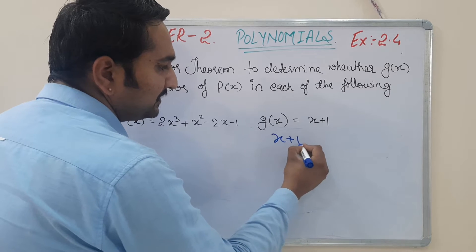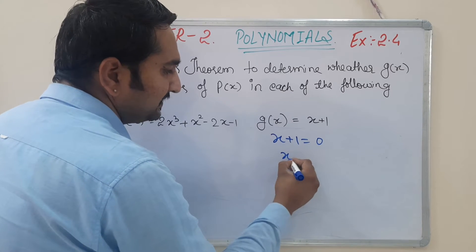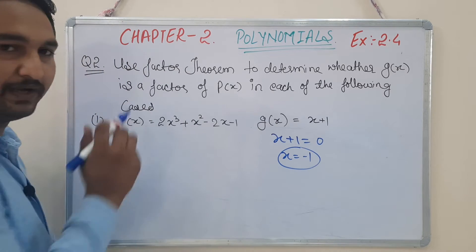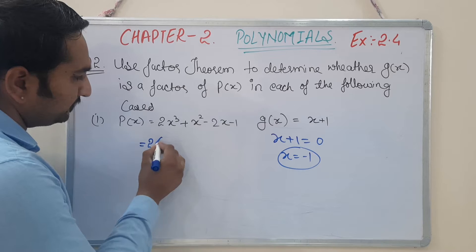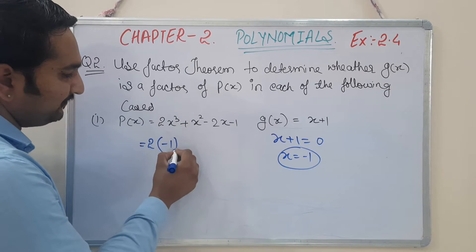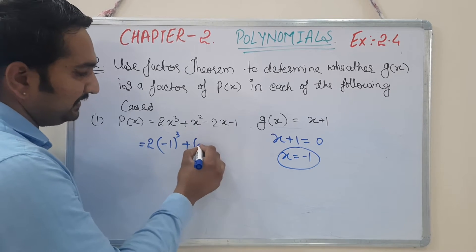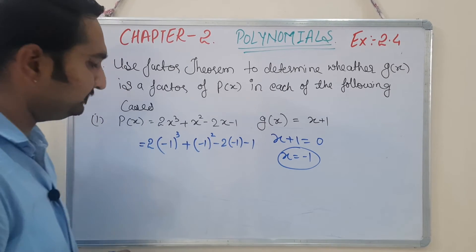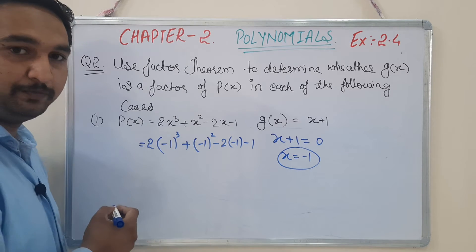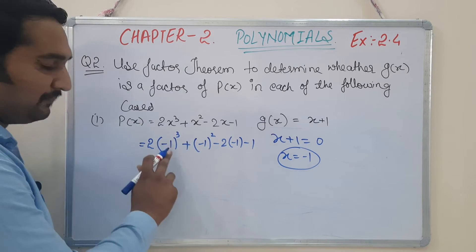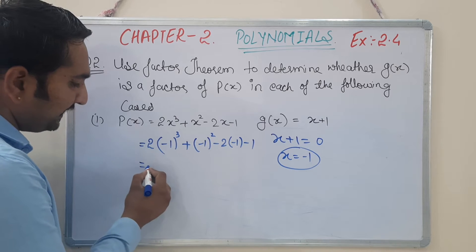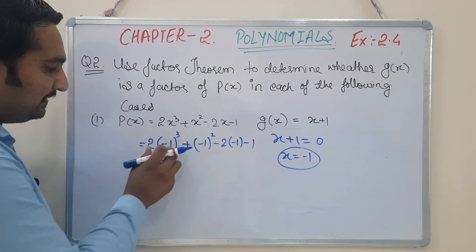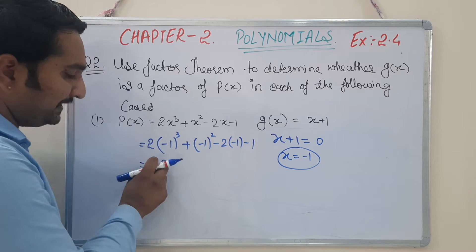For the first question, g(x) = x + 1, so x + 1 = 0 gives x = -1. We now put x = -1 into p(x). So we get: 2×(-1)³ + (-1)² - 2×(-1) - 1. Now (-1)³ = -1, so 2×(-1) = -2. The minus and plus give minus 2.